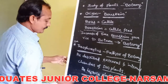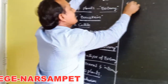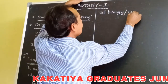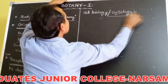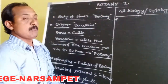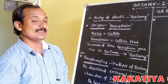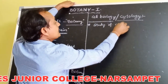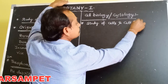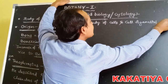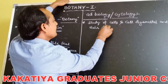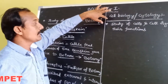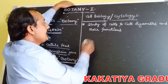Now we are discussing the chapter on cell biology. Cell biology, also called cytology, is a branch of botany. It deals with the study of cells, cell organelles, and their functions.